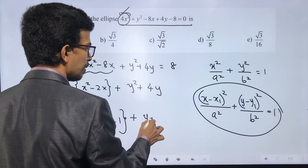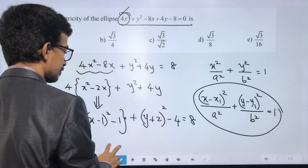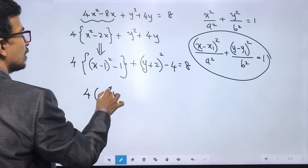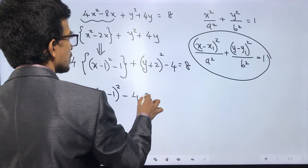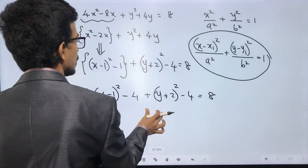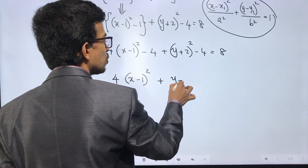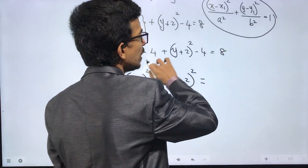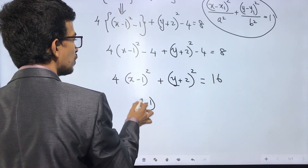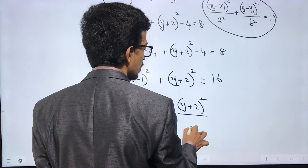And y squared plus 4y becomes (y plus 2) whole square minus 4. So this becomes 4 times (x minus 1) whole square minus 4, plus (y plus 2) whole square minus 4, equals 8.